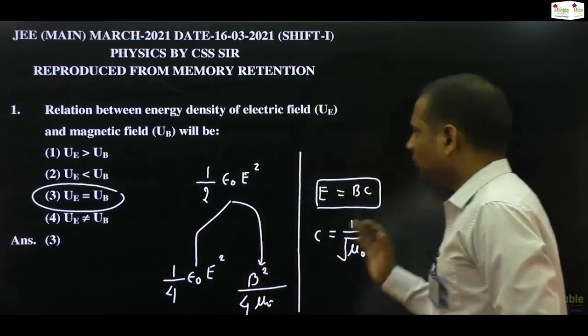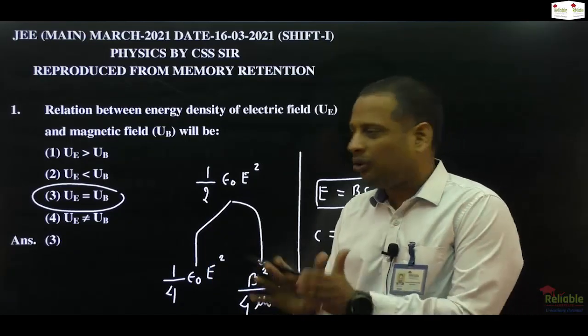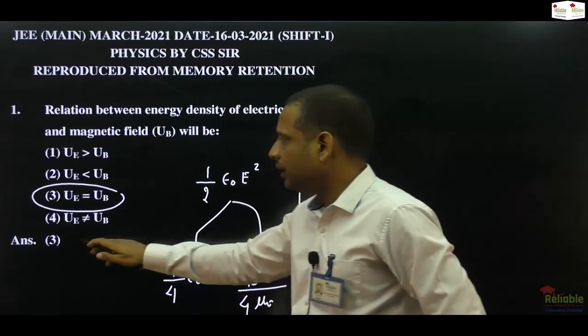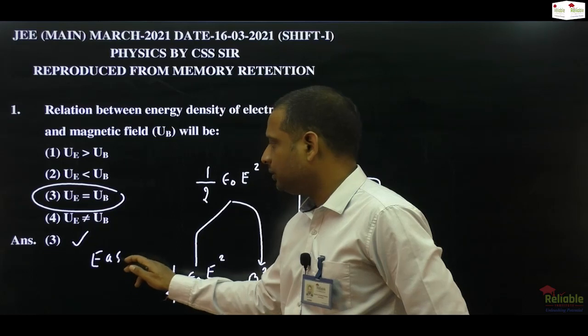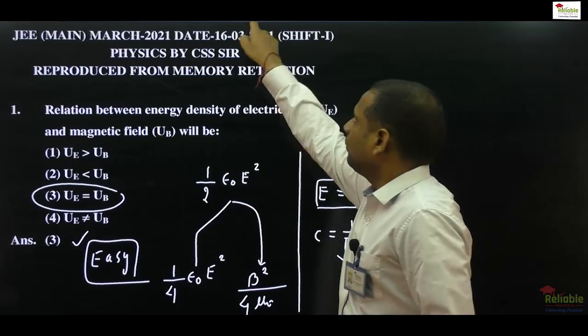So you can call it a memory-based question. It's a theoretical question. There is no calculation involved. If you know it, you will answer it. This question will fall under easy category, and the name of the chapter is electromagnetic wave. So this was the first question, a scoring question.